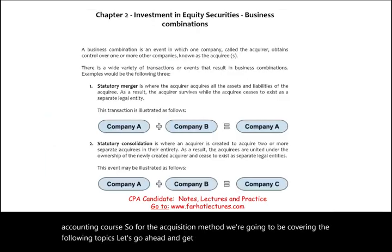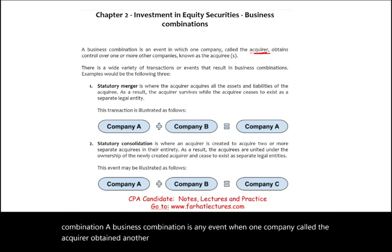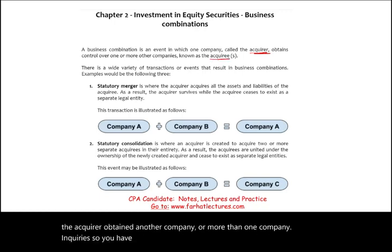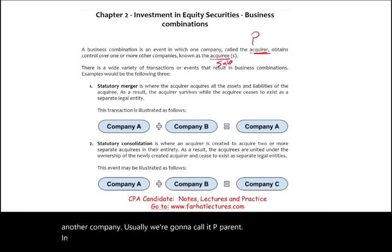What is a business combination? A business combination is any event where one company, called the acquirer, obtains another company or more than one company, called the acquirees. So you have one company buying another company. We generally call it the parent acquiring the subsidiary.